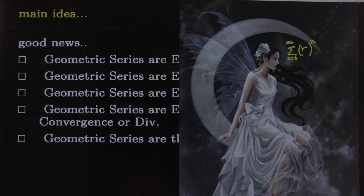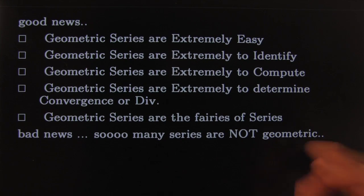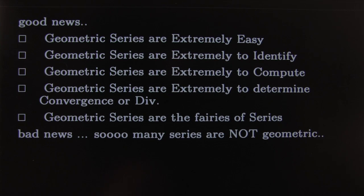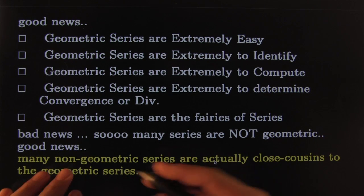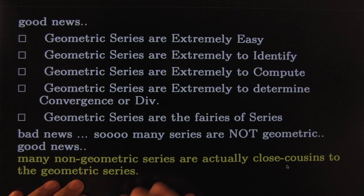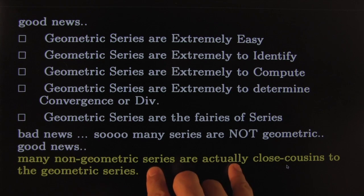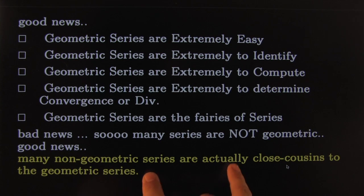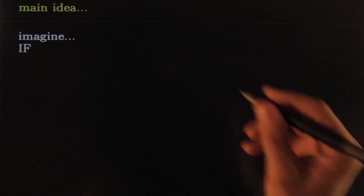Now the bad news: so many series are actually not geometric. However, the good news is that even though some series are non-geometric, many of them are very close relatives of geometric series — they have some fairy blood in them. We can say something about their convergence or divergence by checking how closely they're related to a geometric series. That's the key idea for today's lesson — the root and ratio test: we get to see how much a series behaves like a geometric series even when it is not.